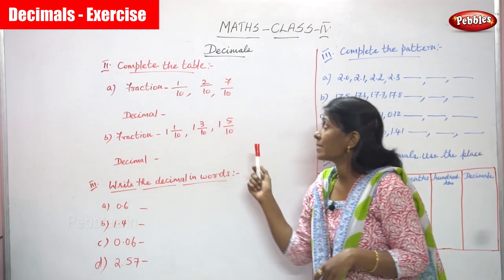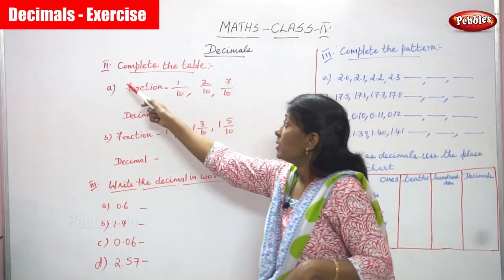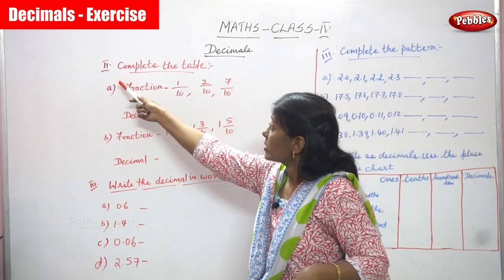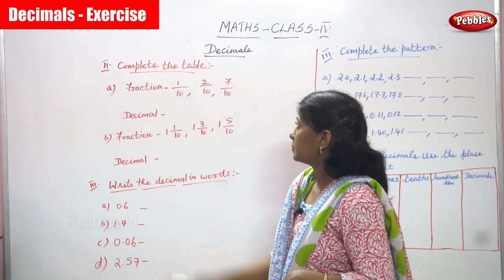Now we are going to solve the exercise, Subdivision 2, otherwise we can call it Roman number 2. Complete the table.